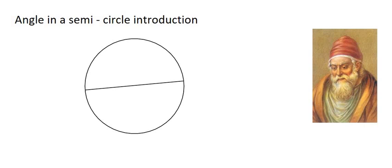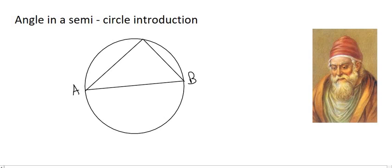Now, we'll call the two ends A and B. Let's use A and B to form an angle on the edge of the circle. You can choose wherever you want. Now, if you measure this angle,